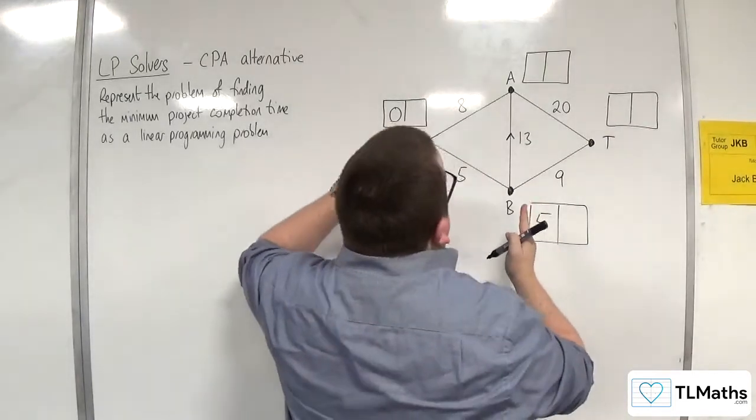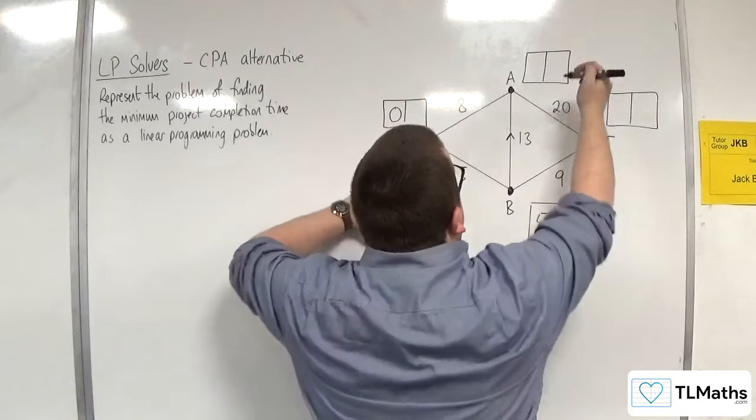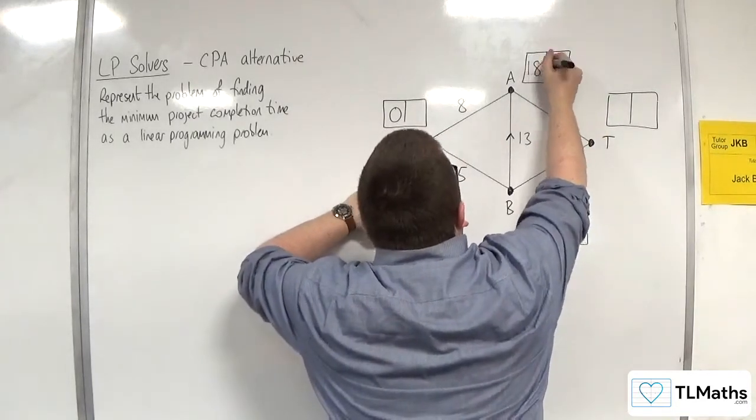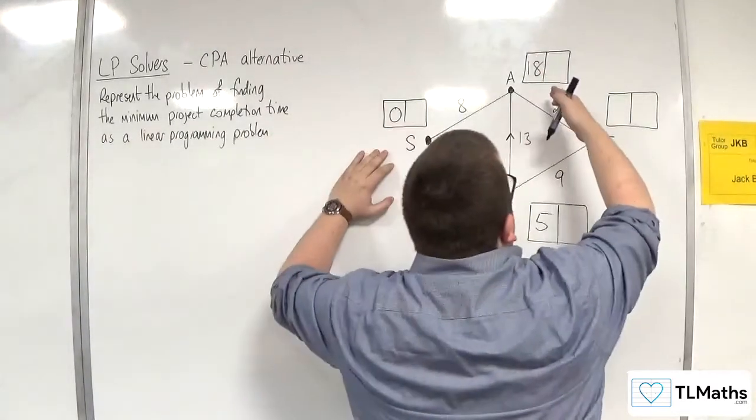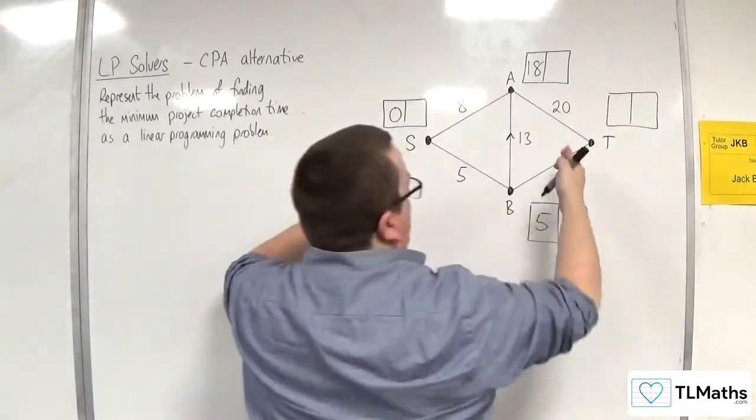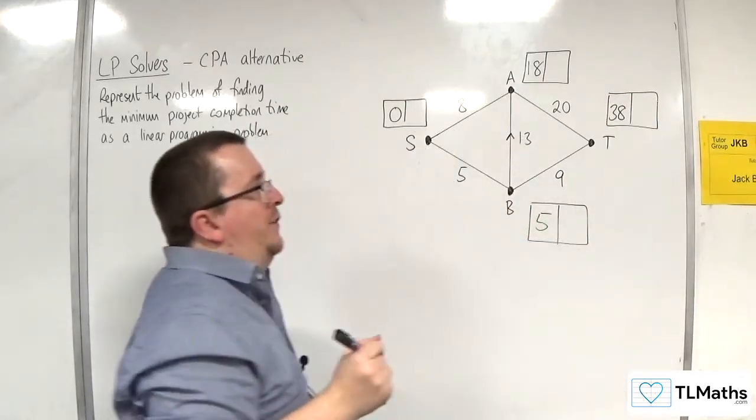Then for A, it's either going to be 5 plus 13, which is 18, or 8. You take the larger of the 2, so 18. And then we've got 18 plus 20 is 38, or 5 plus 9 is 14. So 38 is the earliest completion time.